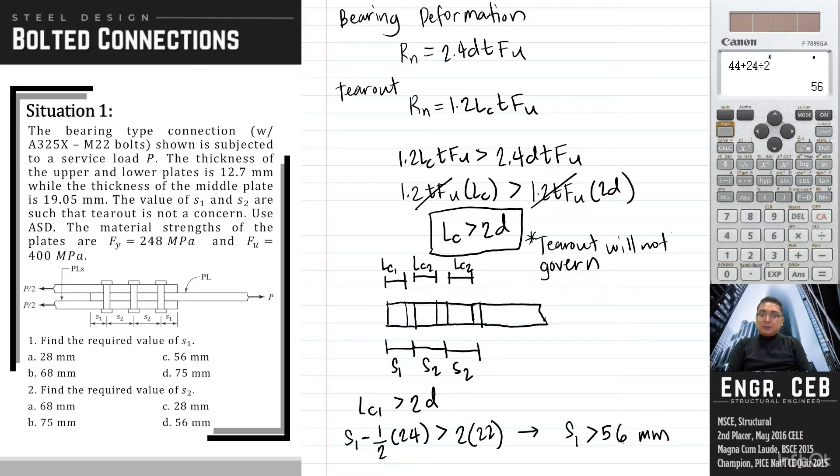Therefore, we can now solve S1 and that is 56mm. So this is now the value of S1 such that tear out will not govern on this portion. So the answer for number 1 is letter C.